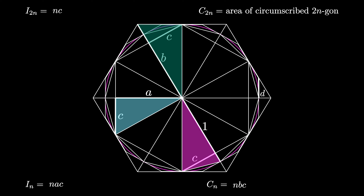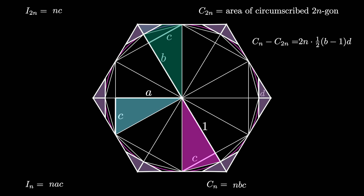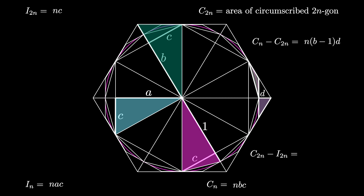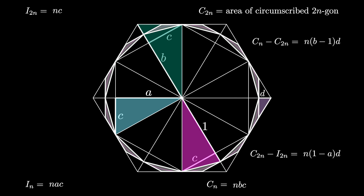Next, let's find the area between the n-gon and the 2n-gon. This can be obtained by taking this triangle and doubling it, and rotating the result n times around the circle. The small triangle has a base of length d and a height of length b minus 1, so the area enclosed is n times (b minus 1) times d. We can also find the area between the two 2n-gons, c sub 2n minus i sub 2n, by rotating a small triangle 2n times. That triangle has a base of length d and a height of 1 minus a, giving an enclosed area of n times (1 minus a) times d.